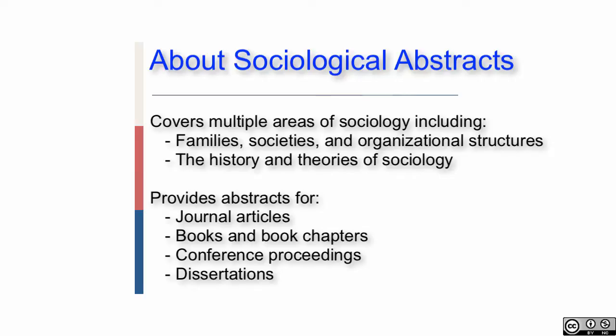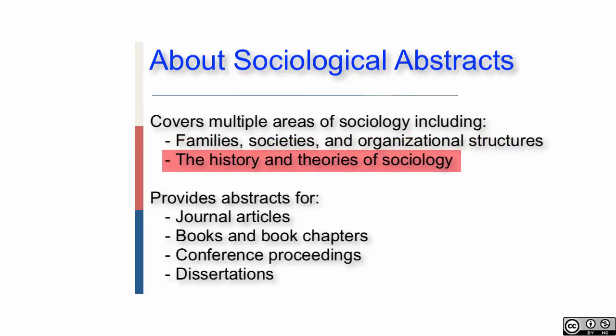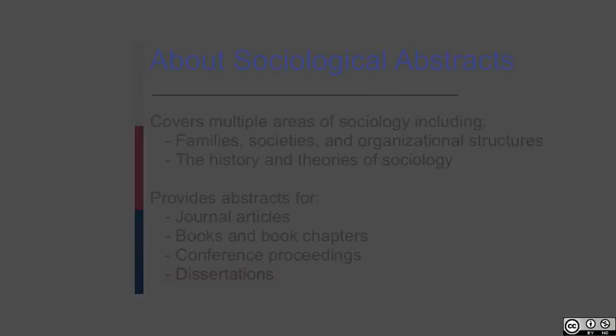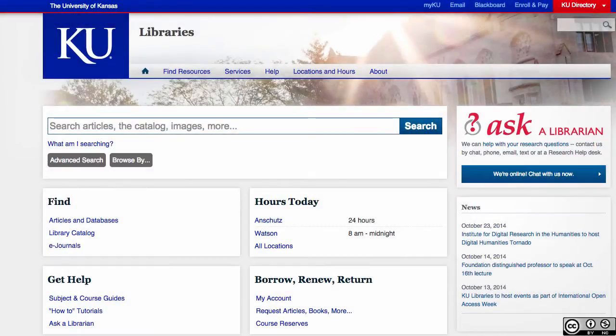Sociological Abstracts is one of the main databases used for research in the field of sociology. This database covers multiple areas of sociology, including families, societies, and organizational structures, as well as the history and theories of sociology. Sociological Abstracts provides abstracts of journal articles, books, book chapters, conference proceedings, dissertations, and more.